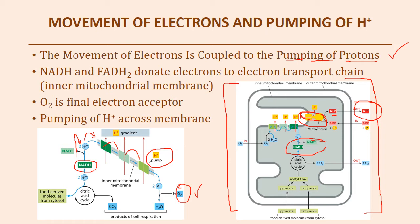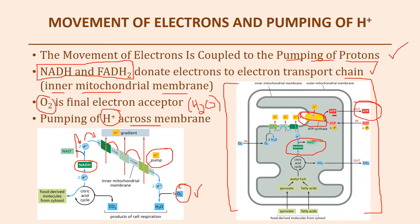NADH and FADH2 donate electrons to the electron transport chain — these are the required inputs for that final step. This is happening within the inner mitochondrial membrane because we require a membrane-based process to complete oxidative phosphorylation. Because we're doing aerobic respiration, oxygen is our final electron acceptor, which is also why we generate H2O as a waste product. The pumping of protons across the membrane is one of the ways we fuel the formation of ATP molecules at the end of cellular respiration.